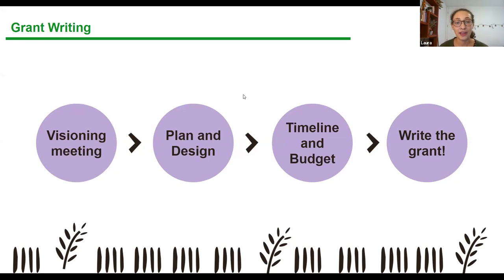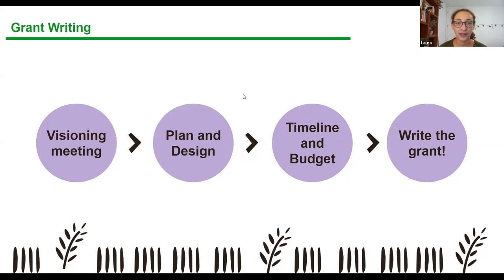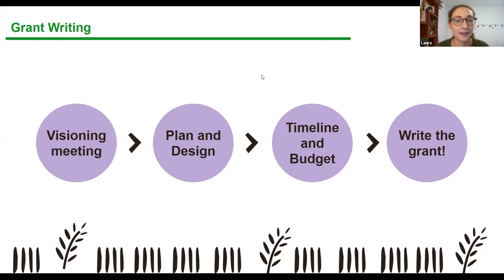Once you have a plan, you'll want a detailed timeline and you'll need to do a lot of research to figure out exactly how much it's all going to cost. When you have all that information, you'll be ready to actually sit down and write the grant, answer the questions, and submit it. We're going to go through all of these steps in a little more detail.